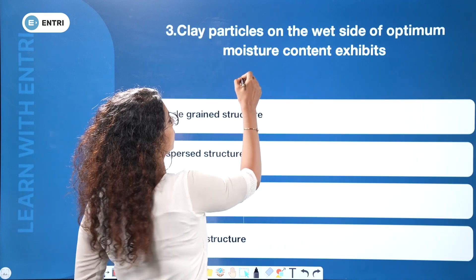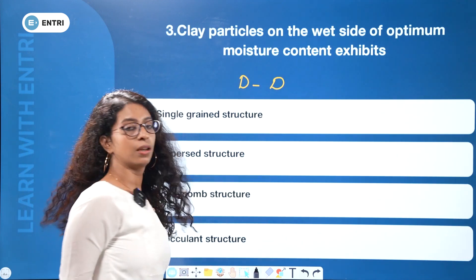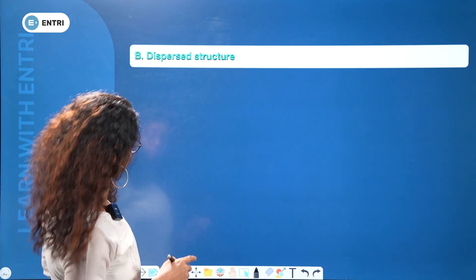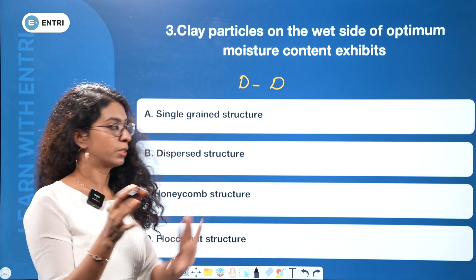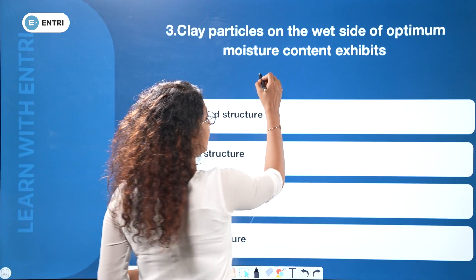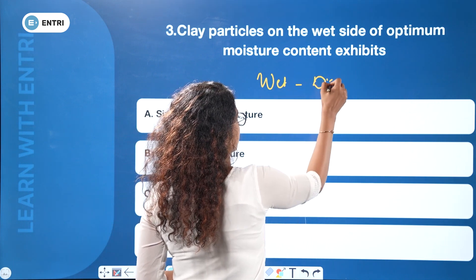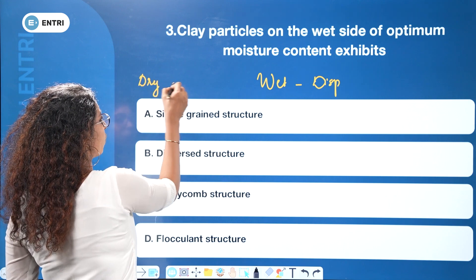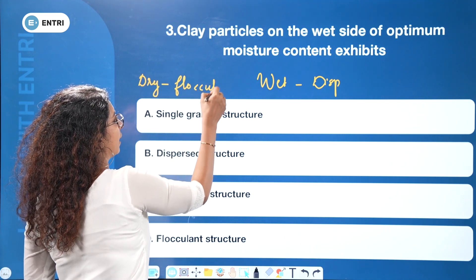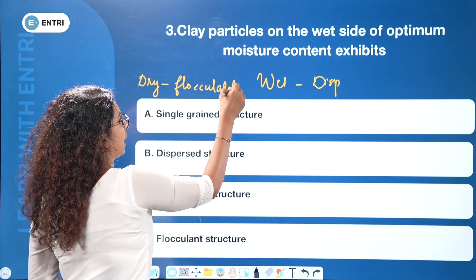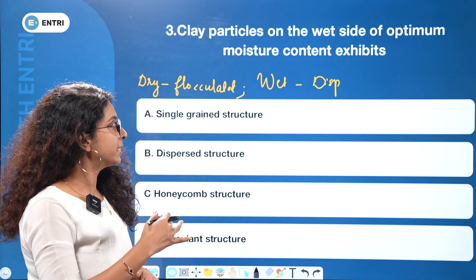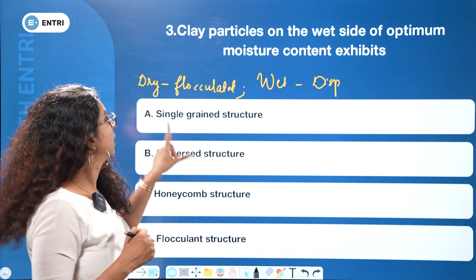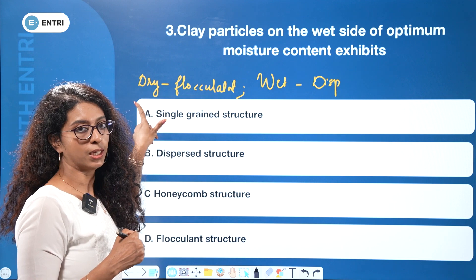To clarify: dry side of optimum gives a flocculated structure; wet side of optimum gives a dispersed structure. On the dry side, shear strength is higher. On the wet side, shear strength is lower. So we can do more with dry of optimum in terms of shear strength.